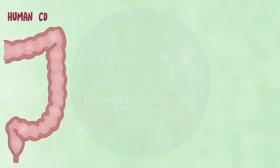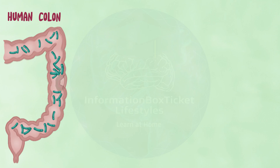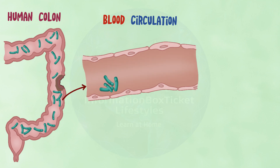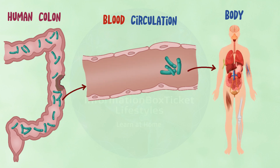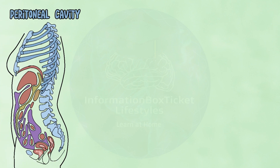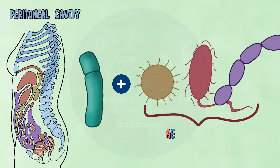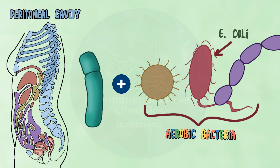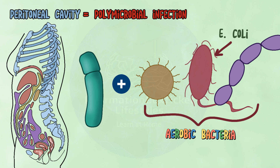Bacteroides fragilis usually colonizes the human colon calmly and without creating any problems. However, trauma or surgery can disrupt the intestinal wall, allowing Bacteroides fragilis to enter the circulation. From there, it may reach almost every organ in the body. Alternatively, it might enter the sterile peritoneal cavity together with aerobic bacteria like E. coli, which are also part of the normal gut flora. Hence, peritoneal infections are typically referred to as polymicrobial infections, indicating that there is more than one perpetrator.